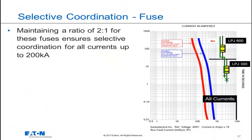Maintaining a ratio of 2 to 1 for these fuses ensures selectivity for all currents up to their interrupting rating, which is 200,000 amps. As you'll note, I maintained a 2 to 1 relationship with a downstream fuse of an LPJ-300 downstream of an LPJ-600. 600 is 2 times 300.